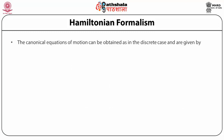The canonical equations of motion can be obtained as in the discrete case and are given by: φ̇_α(x) = δH/δπ_α(x), and π̇_α(x) = −δH/δφ_α(x).